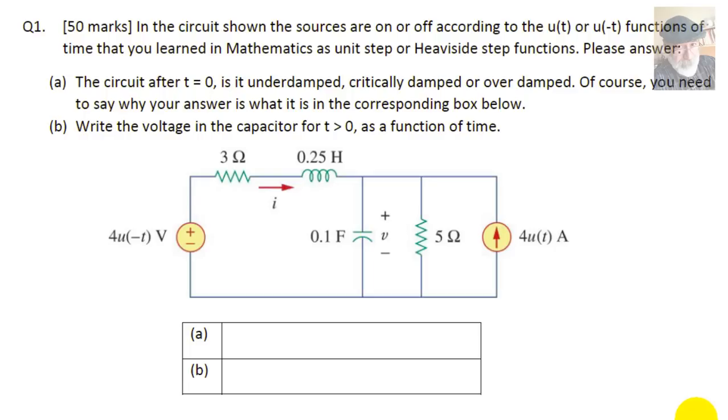Let's work on the first question of the second midterm of ELEC 202, electric circuits 2. This question is about second order circuits. A circuit that has, as you can tell, an inductor and a capacitor. In the circuit shown, the sources are on or off according to the u(t) or u(-t) functions of time that you've learned in mathematics as unit step or Heaviside step functions.